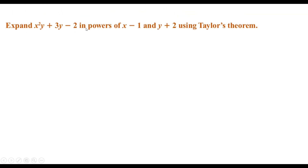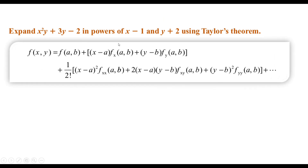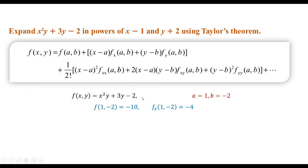Example 3: Expand a polynomial function f(x, y) in powers of (x−2) and (y+2) using the Taylor series approximation. This is a function of two variables, and we need to expand it as a Taylor series in terms of (x−2) and (y+2), where a = 2 and b = −2 are the expansion points. We write the Taylor series expansion about the point (a, b) = (2, −2).